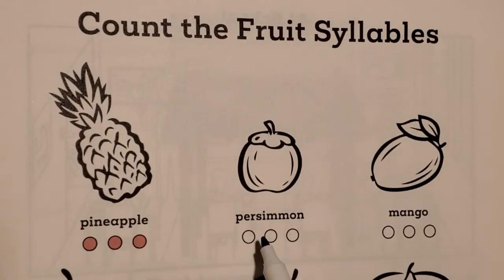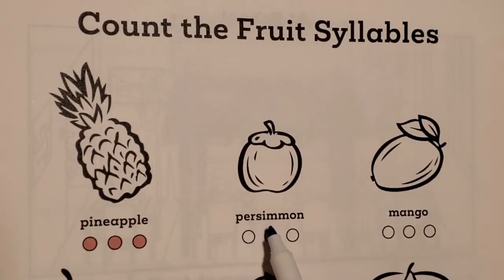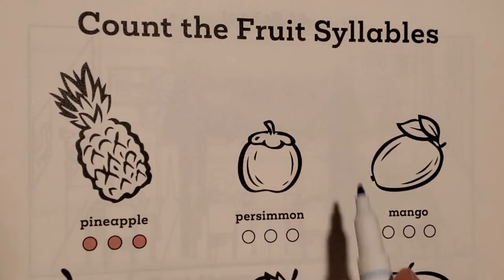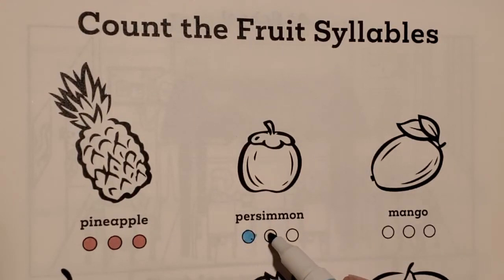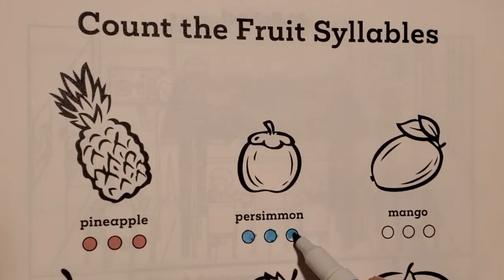Per-sim-mun. Per-sim-mun. Three syllables.